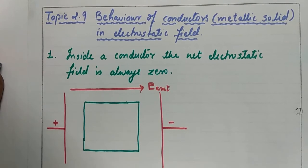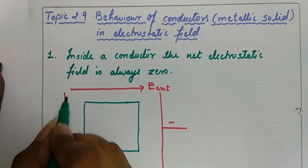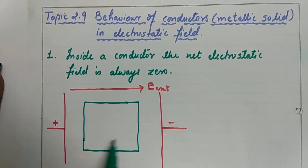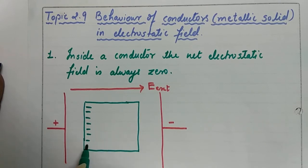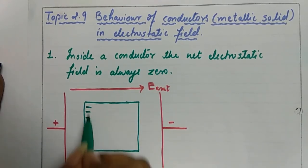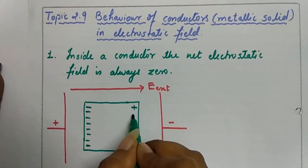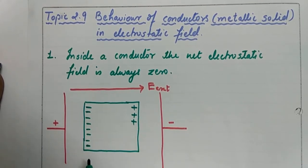Because of this external electrostatic field, the free electrons inside this conductor will get drifted towards the positive side of the external electric field. So all the free electrons inside this conductor will start moving towards the positive plate. As this side accumulates electrons, it becomes negative, and the other side — having lost electrons — becomes positively charged.